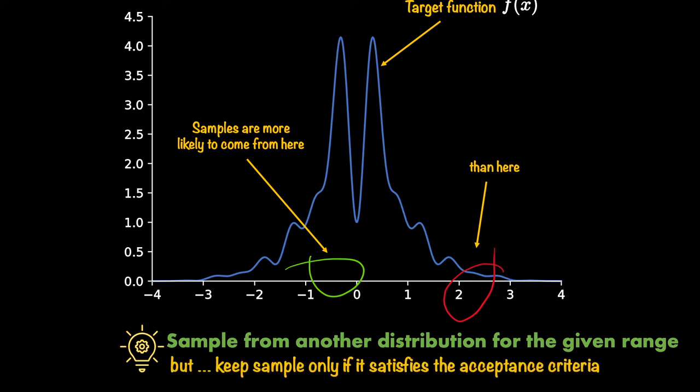Yes, you would sample from a proposal distribution function, but make sure that the collected samples would follow the target function. Remember, I described earlier that following the target function means that they would be sampled in accordance with their chances of occurrence.